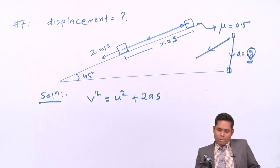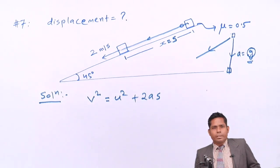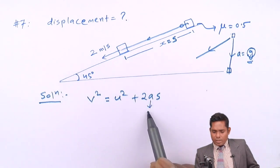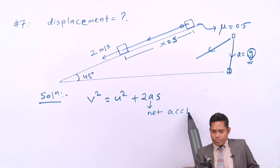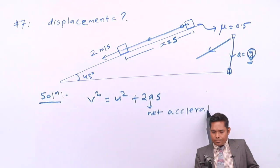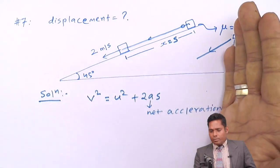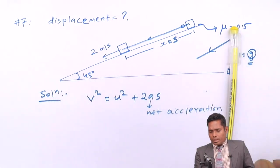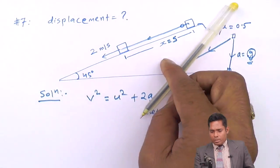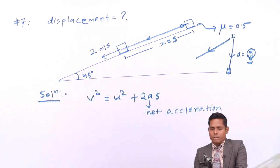The net acceleration along the incline must be found. Without friction, we take the component of g along the incline direction, which is g sin 45. Since g acts vertically downward and the angle is 45 degrees, the component along the slope is g cos 45 perpendicular and g sin 45 along the slope.